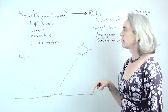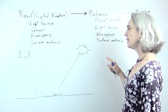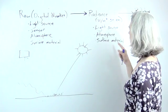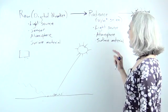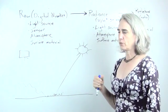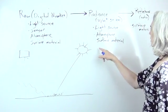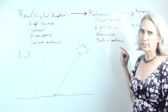So once you have your data in radiance, and there's a little tool in ENVI that can do this for you, it still has the effects of the light source, it has the effects of the atmosphere, and it also has the effects of the surface material. Now typically, we're really only interested in the surface material part of this.